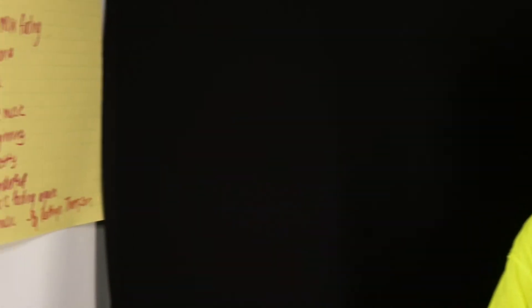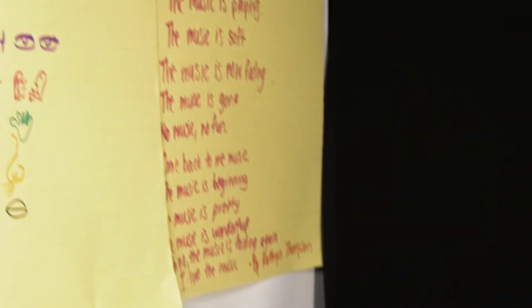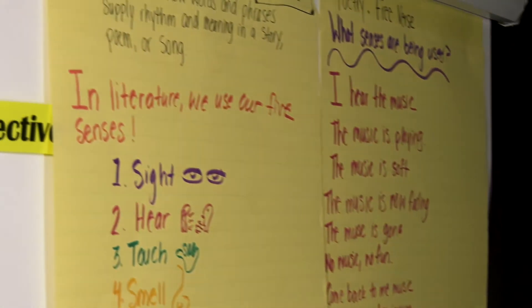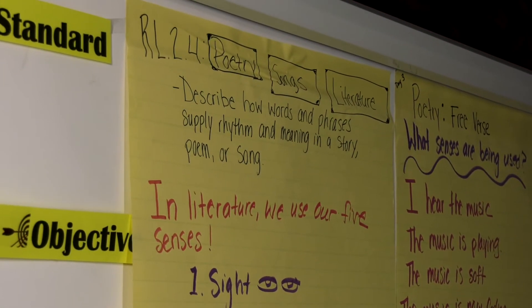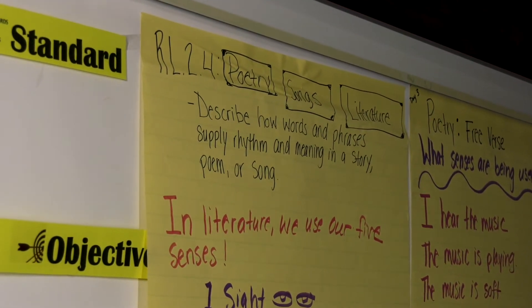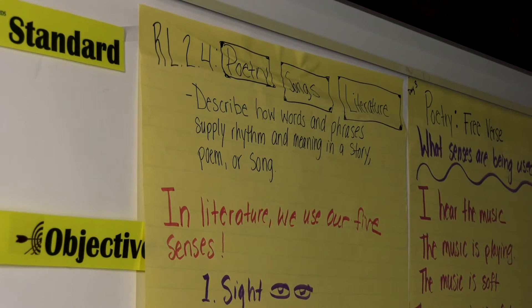Our standard is RL 2.4, which is describe how words and phrases supply rhythm and meaning in a story, poem, or song.